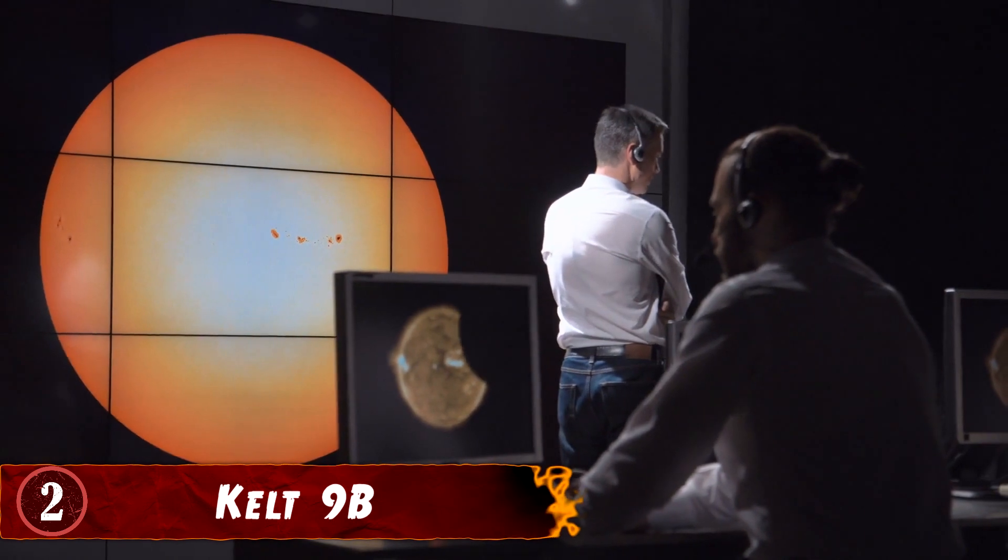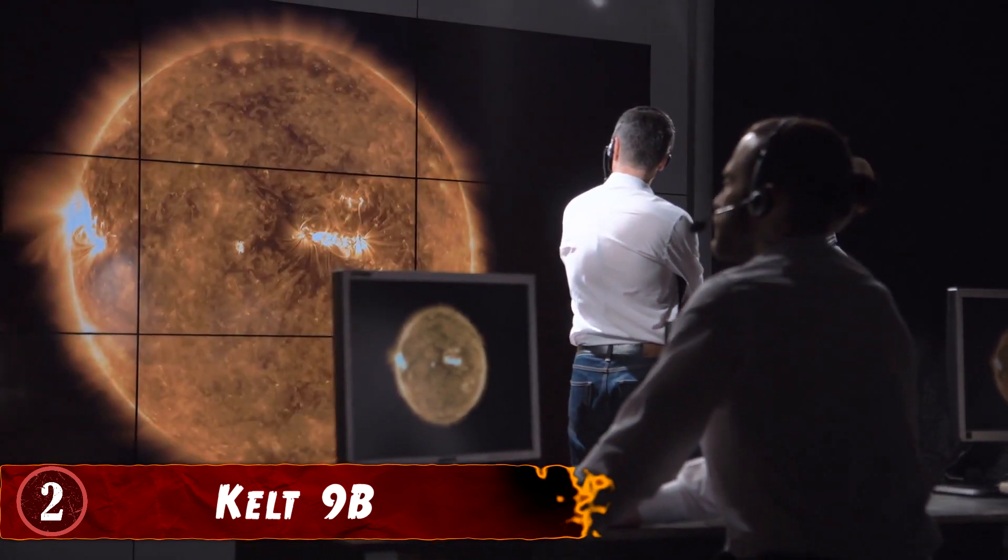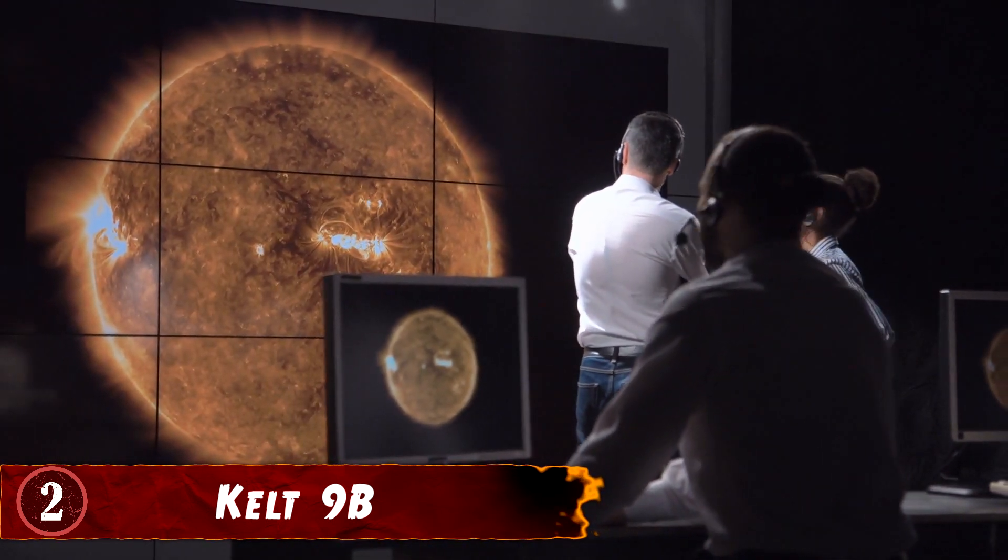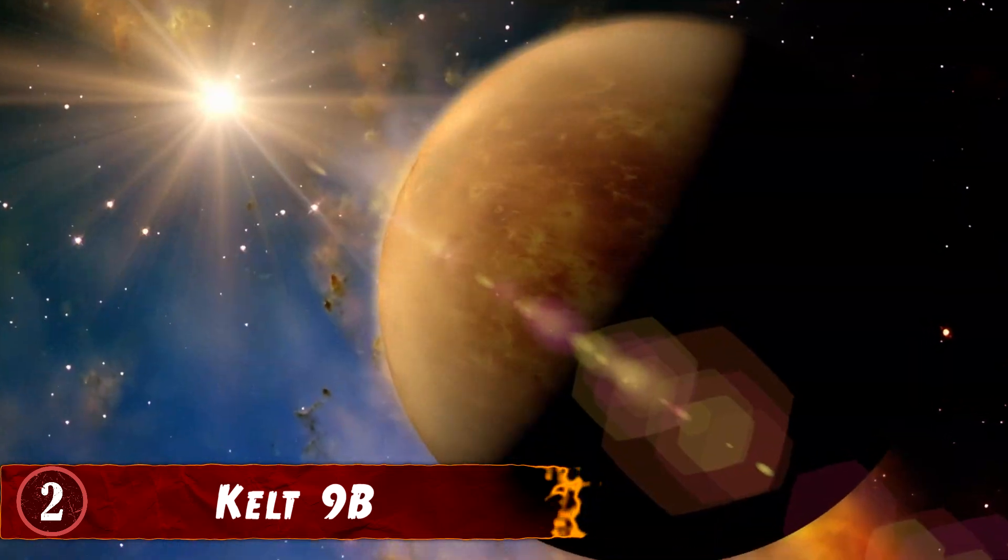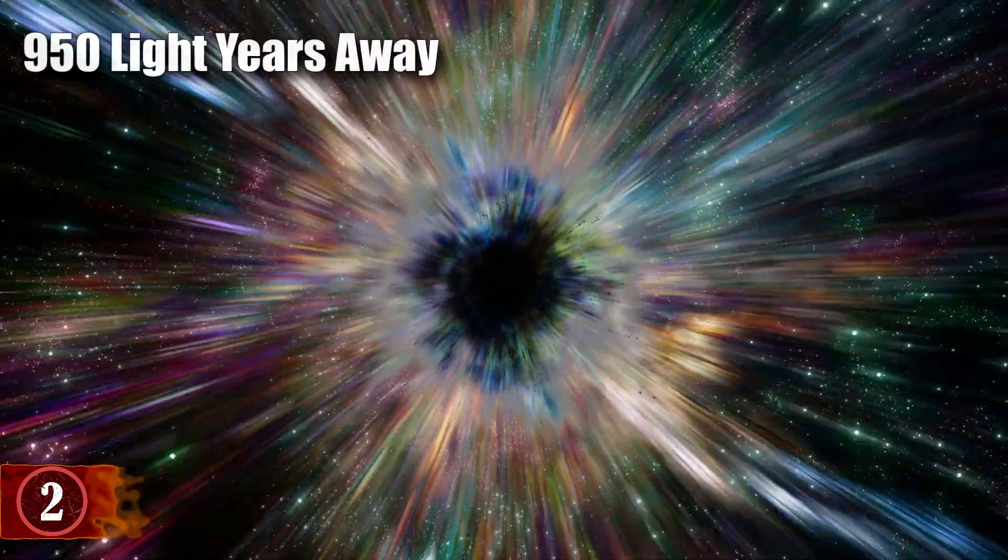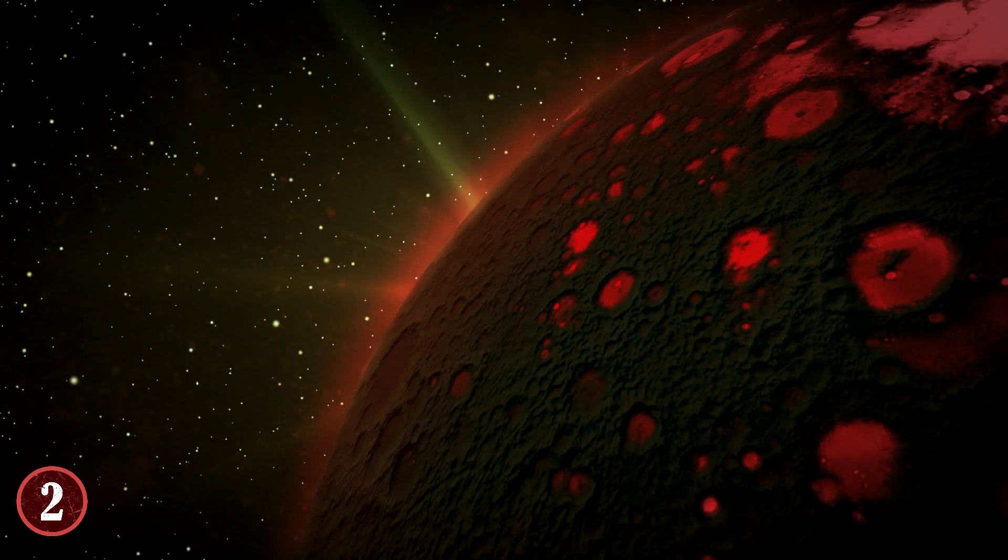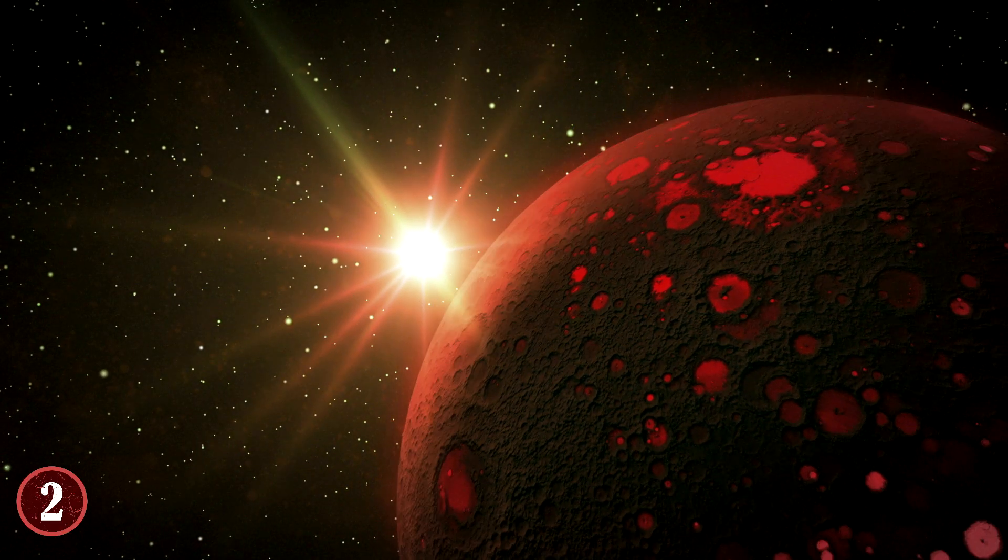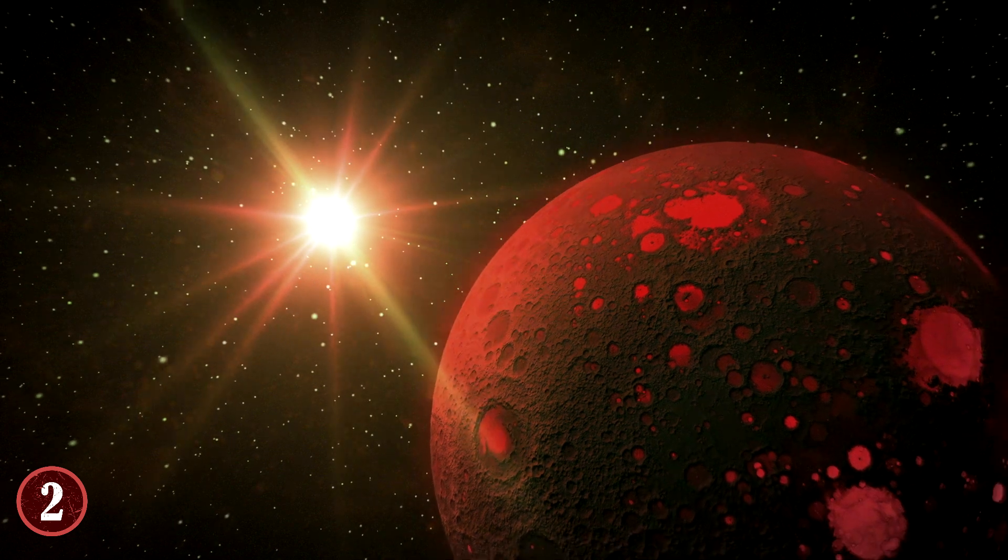Number 2: KELT-9b. KELT-9b is a planet that is well and truly burning the life out of itself, and is in fact the hottest exoplanet ever discovered in our universe. Thankfully, the planet is about 950 light-years away from Earth. So, humanity won't have to really worry about it.